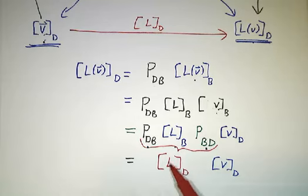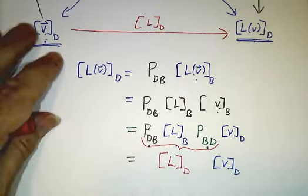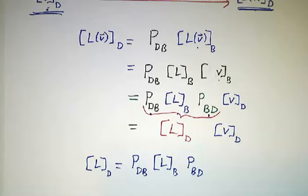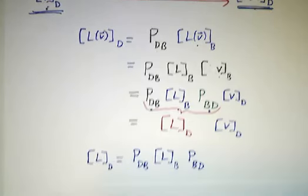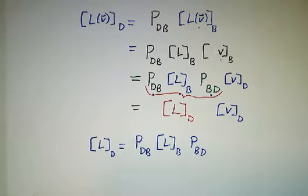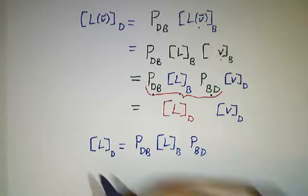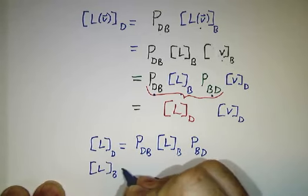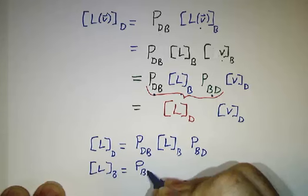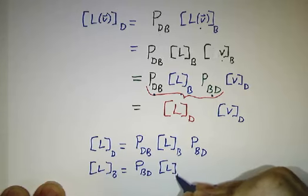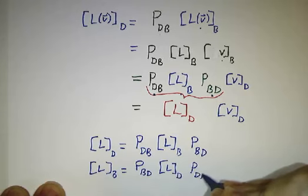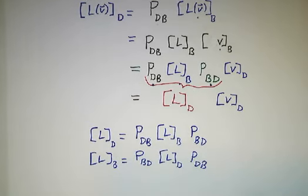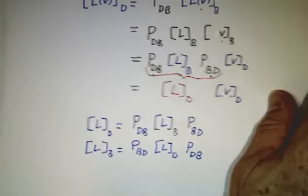So L on the d basis is given as this product. Or you could just as well write L on the b basis using the same formula with roles reversed: Pbd, Ld, Pdb. And that's what we had on the first page. That's all for now.